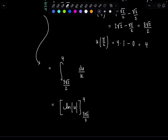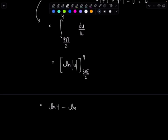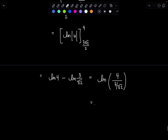You need the absolute value as long as there's a variable that could possibly make the argument of the natural log negative. You can drop them once you plug in the limits and see they're already positive values, but at this step you can't drop them just yet. So we get natural log of 4 minus natural log of 3 root 2 over 2. I'll unrationalize that to 3 over root 2. Using log properties, I can combine these into a single logarithm: natural log of 4 divided by 3 over root 2. The root 2 flips up to the numerator, giving us natural log of 4 root 2 over 3.